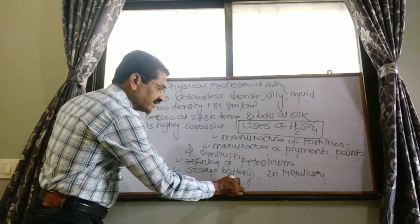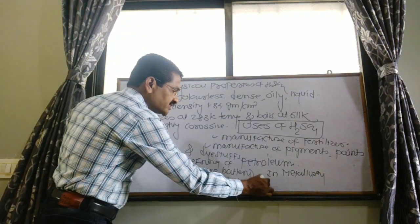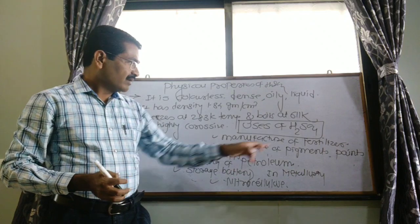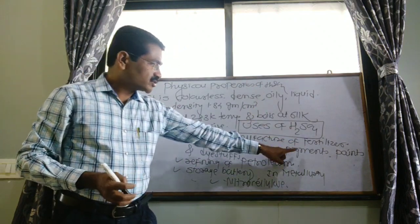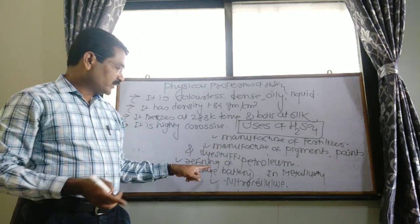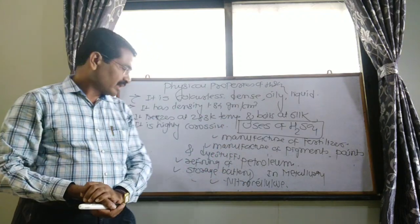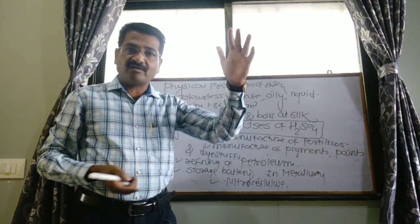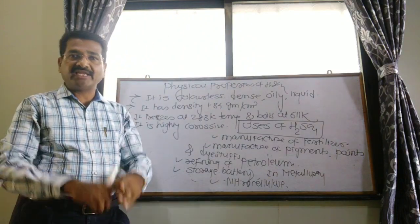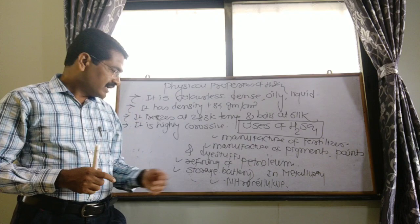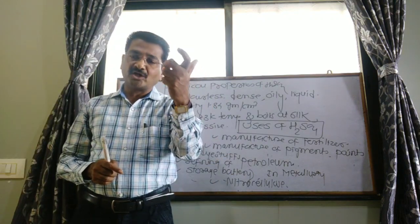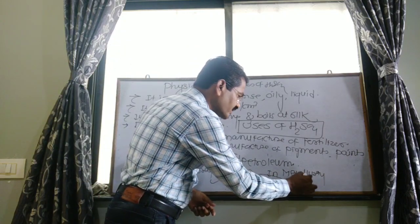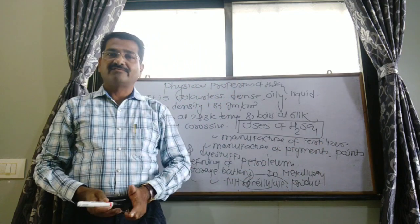And last, sulfuric acid is used in the manufacture of nitrocellulose products. So these are the uses of sulfuric acid: fertilizers; manufacture of pigments, paints, and dye stuff; refining of petroleum; storage battery; metallurgy for cleaning metals by electroplating and galvanizing; and manufacture of nitrocellulose products.